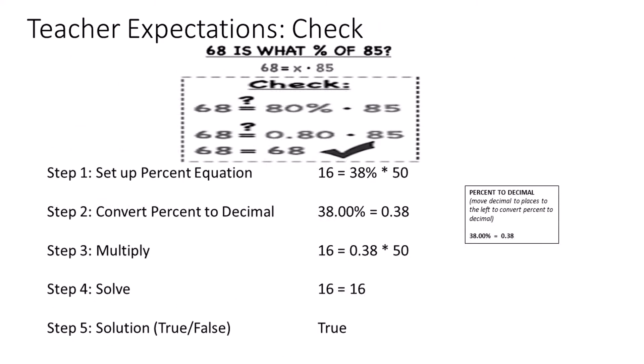Now we want to check our work by setting up a percent equation. We will simply multiply the percent by the whole. Convert the percent into a decimal by moving the decimal place two places to the left. We have 0.38 times 50, which equals 19, confirming our original answer is true.